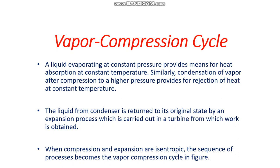The liquid from the condenser is returned to its original state by an expansion process carried out in a turbine, from which work is obtained. When compression and expansion are isentropic — that is, at constant entropy — the sequence of processes becomes the vapor compression cycle.